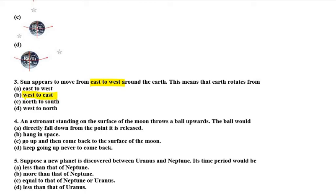Question number 4 is: an astronaut standing on the surface of the moon throws a ball upwards. The ball would directly fall down from the point it is released, hang in space, or go up and then come back to the surface of the moon. So the right answer is go up and then come back to the surface of the moon.